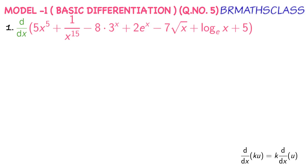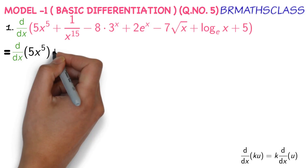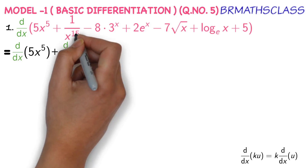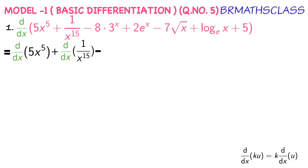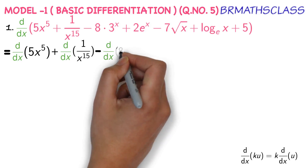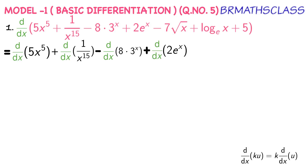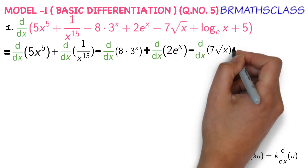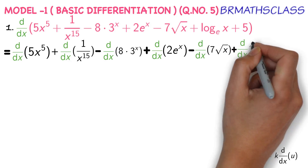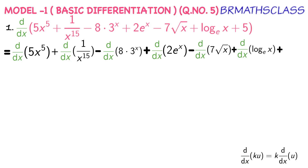We need to find the derivative of the given expression. From previous classes, we learned how to differentiate this type of function. We will differentiate each and every term: derivative of 5 times x power 5, plus derivative of 1 divided by x power 15, minus derivative of 8 into 3 power x, plus derivative of 2 into e power x, minus derivative of 7 root x, plus derivative of log x base e, plus derivative of 5.